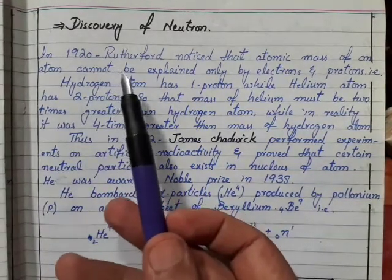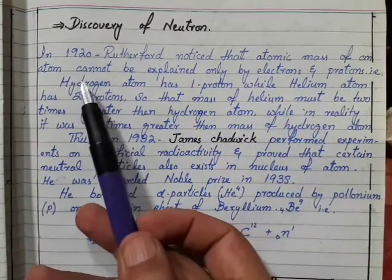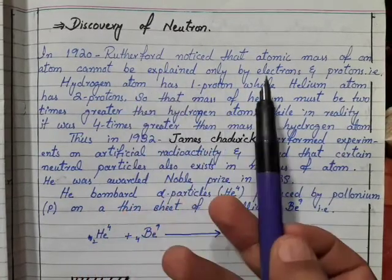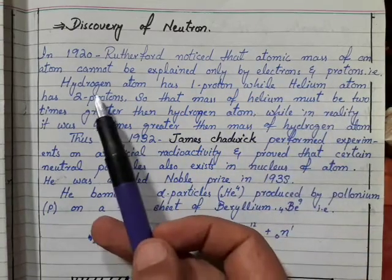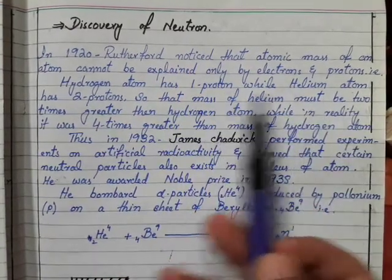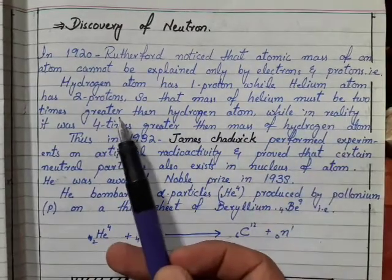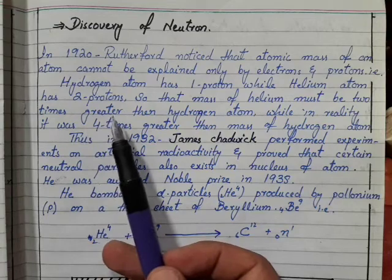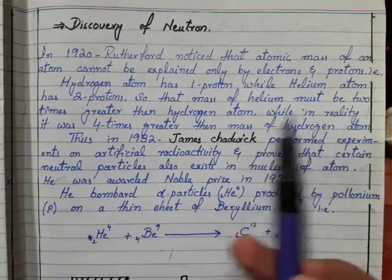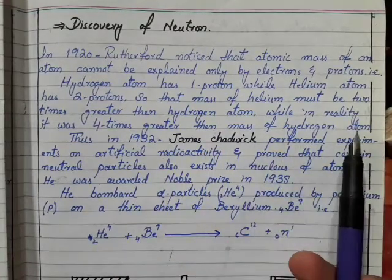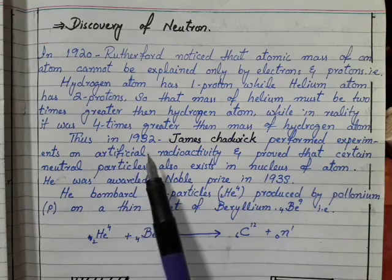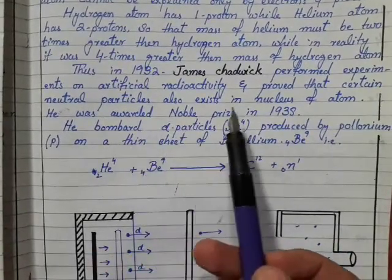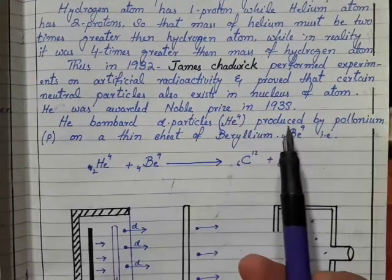In 1920, Rutherford noticed that atomic mass of hydrogen atom cannot be explained only by electrons and protons. Hydrogen atom has one proton while helium atom has two protons, so the mass of helium must be two times greater. While in reality it was four times greater than the mass of hydrogen atom.